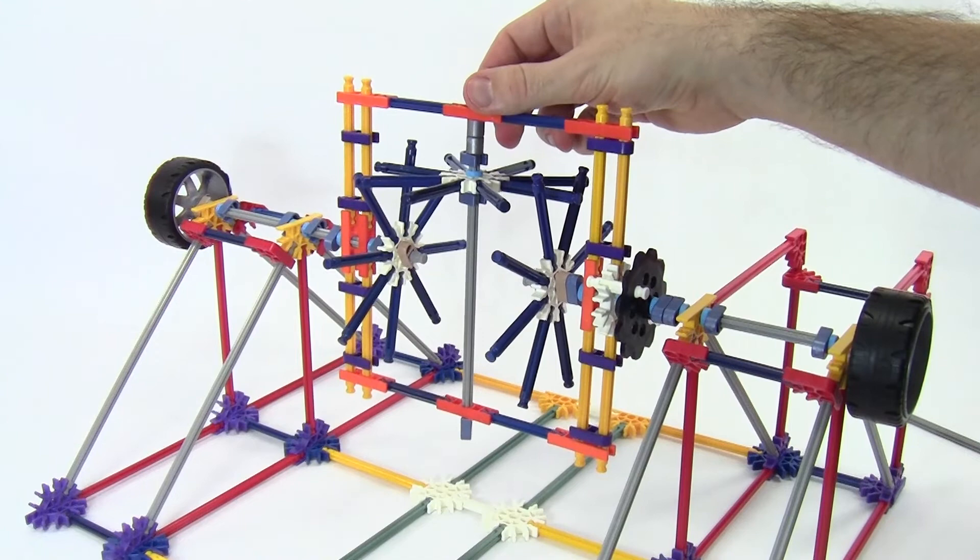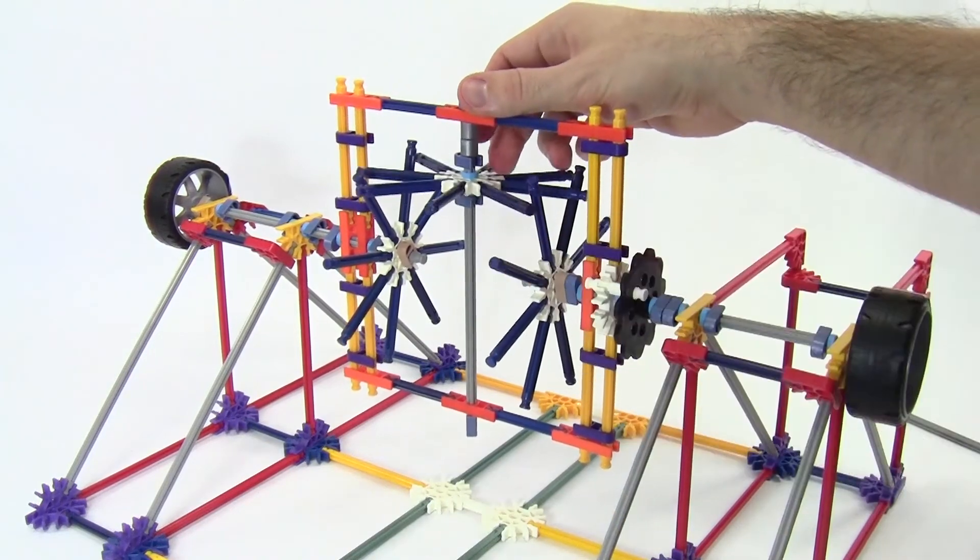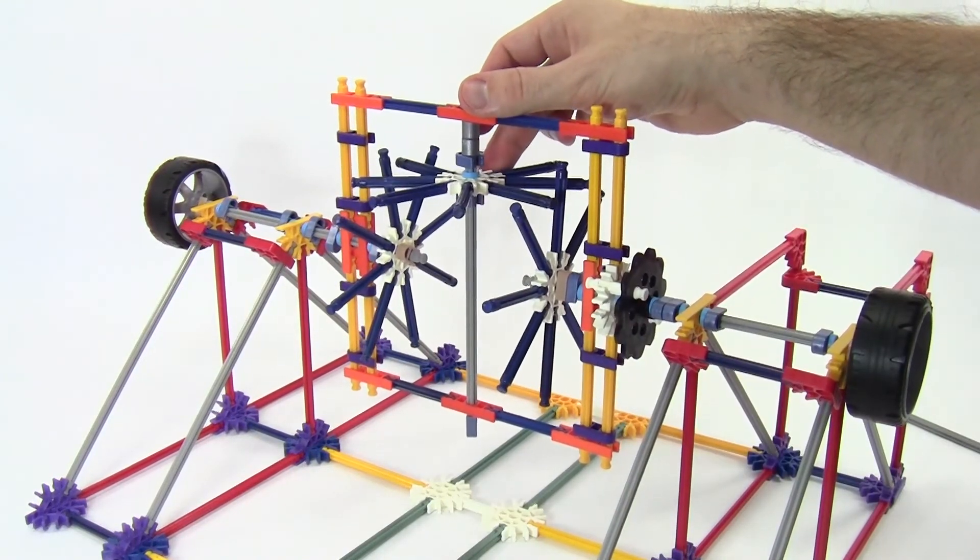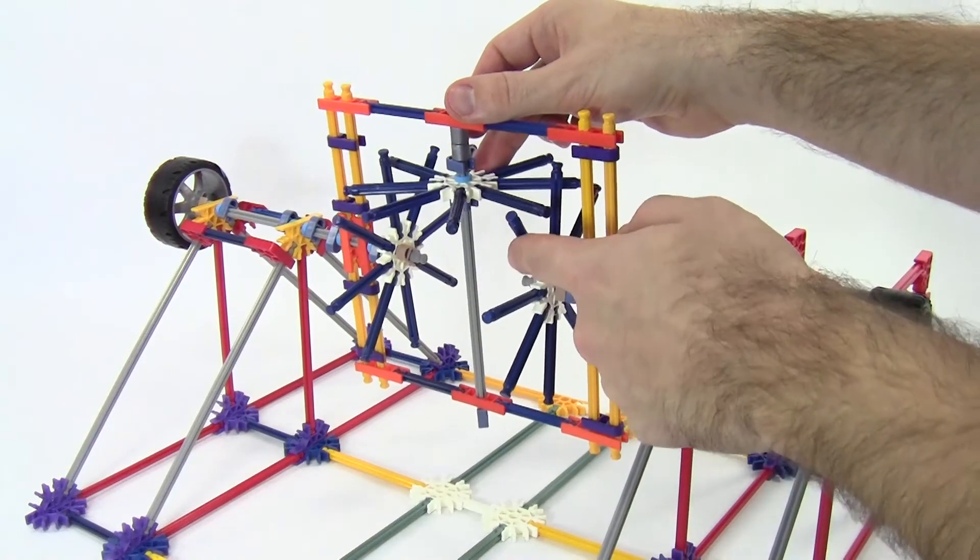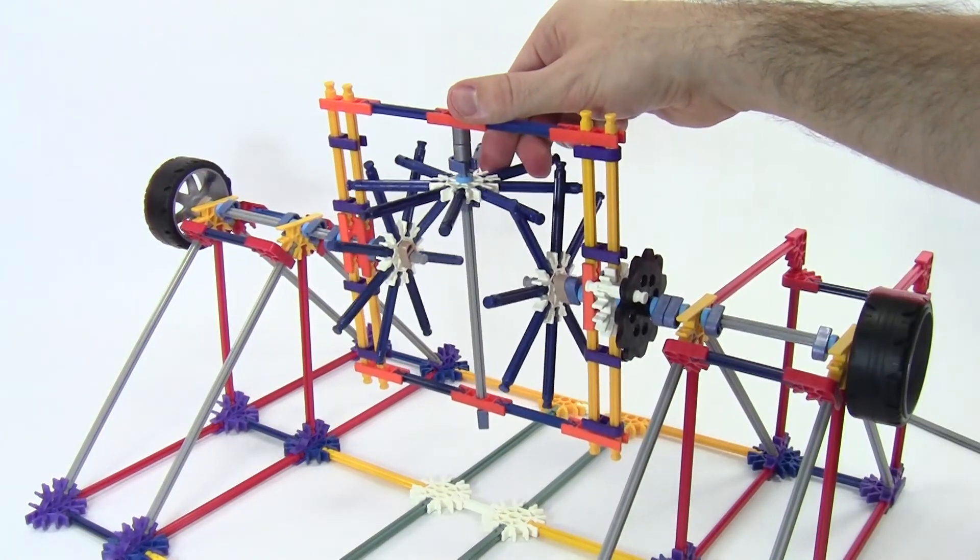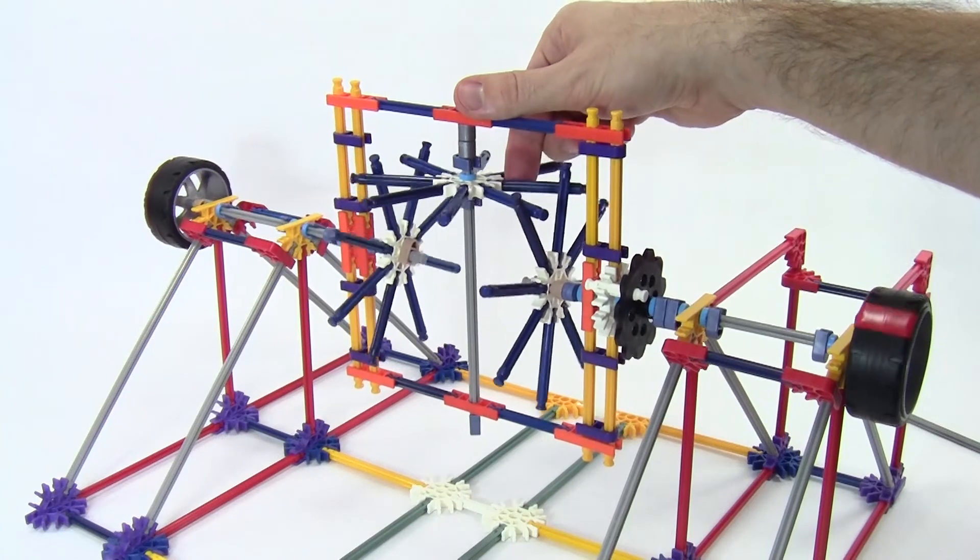We can get around that by adding more spokes. Here I have added eight spokes to each white piece, effectively creating gears. Now, each time two of the spokes lose contact, the next set of spokes will catch, allowing continuous rotation.